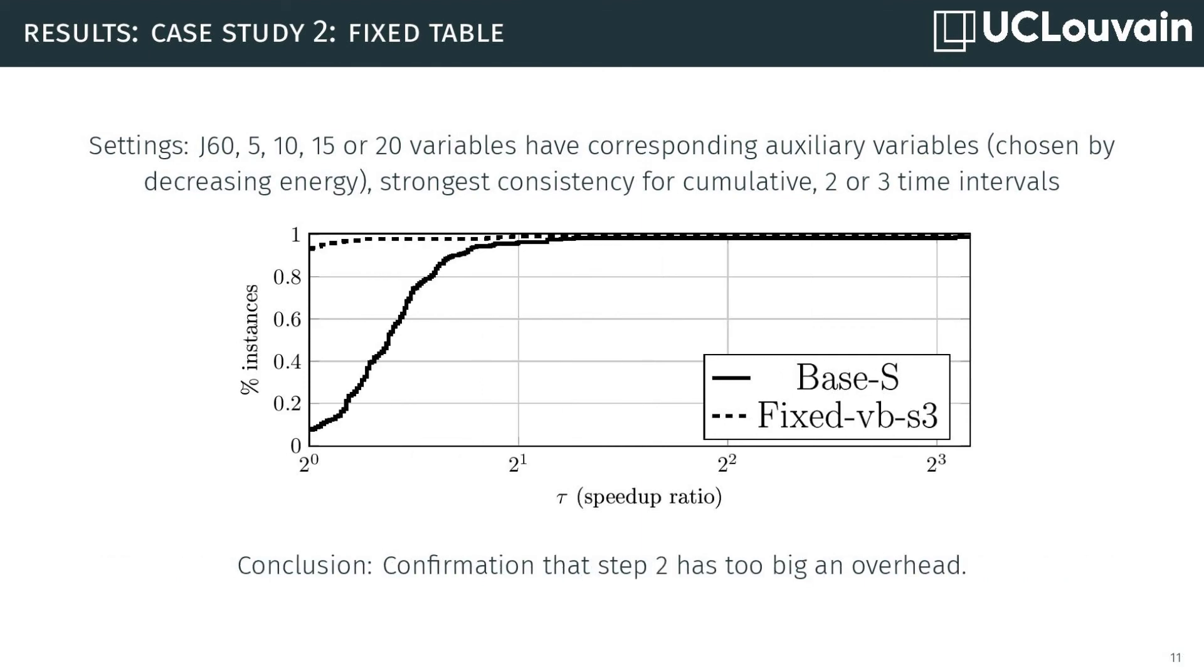To help us confirm this, we compared the baseline to the time taken by step 3 only, as if computing the relaxed table was free. In this case, 90% of the instances benefit from the use of the redundant table.